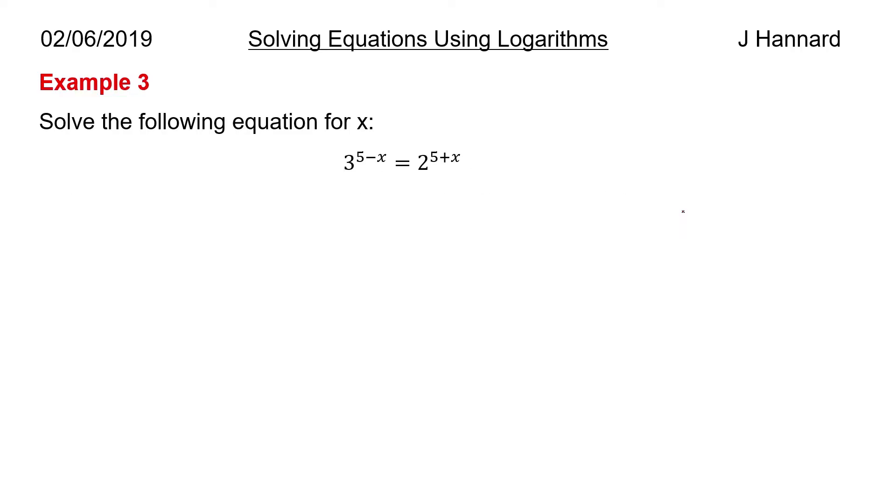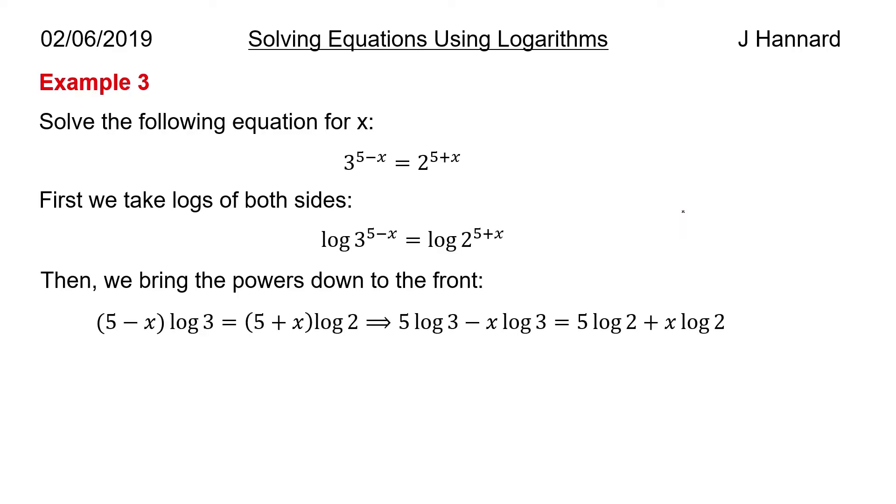Dead easy so far. So this time solve the following equation for x: 3 to the 5 minus x equals 2 to the 5 plus x. So again, take the logs of both sides and we get that, and then the powers drop down so we get 5 minus x times log 3 equals 5 plus x log 2.